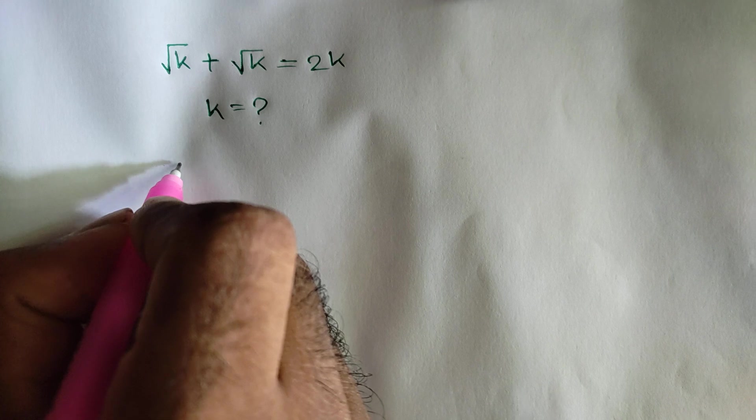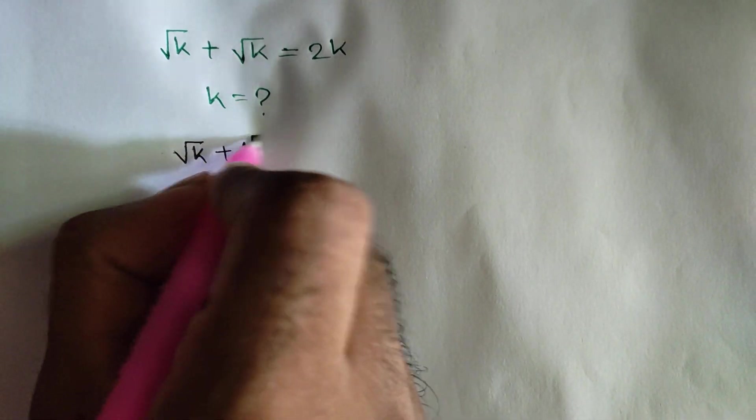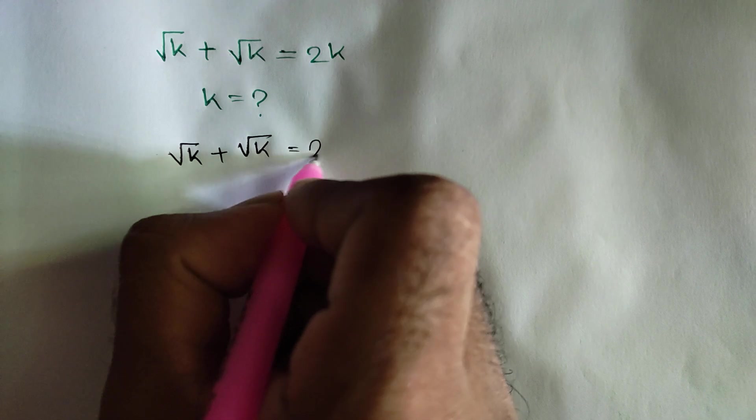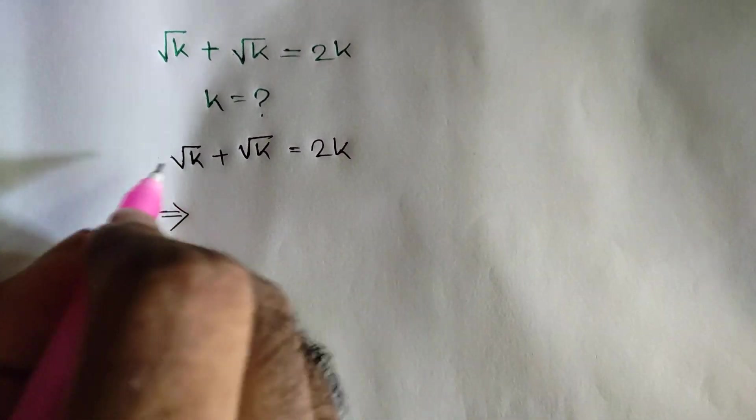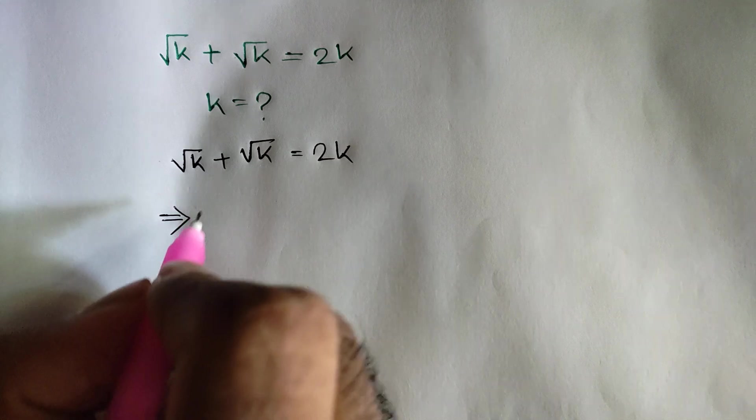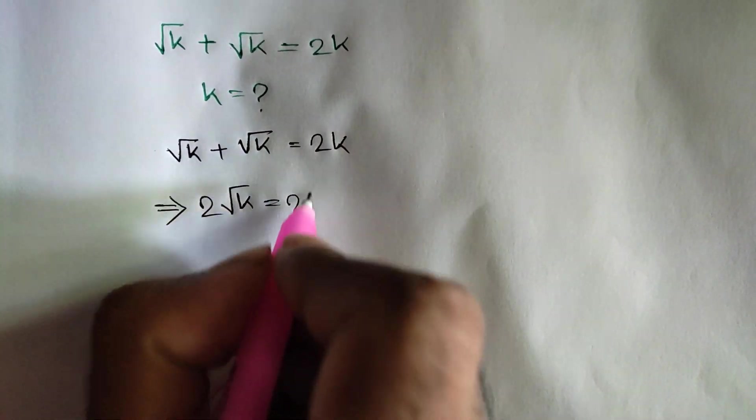The question is given: square root of k plus square root of k is equal to 2k. Or, square root of k plus square root of k, which is 2 square root of k, is equal to 2k.